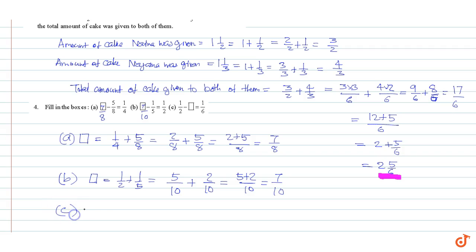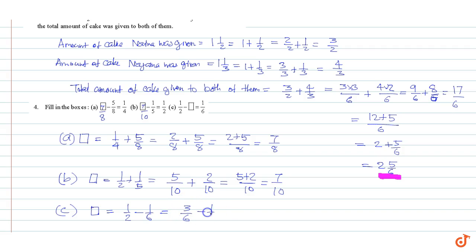Part C: unknown is equal to one by two minus one by six. Taking LCM as six, we get three by six minus one by six, which is equal to three minus one by six, equal to two by six. This is equal to one by three. So this is one by three.